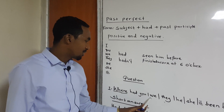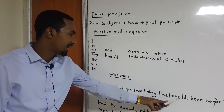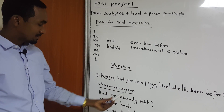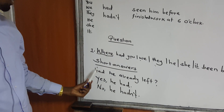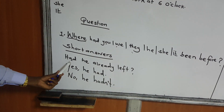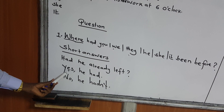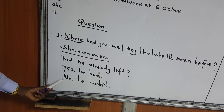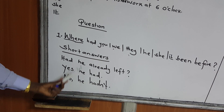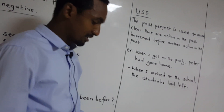Where had we been? Where had they been? Where had he been? Where had she been before? So this is the question. When we move to short answers — this is the question that requires only yes or no. Had he already left? The answer is: yes, he had, or no, he hadn't. That is the short answer.